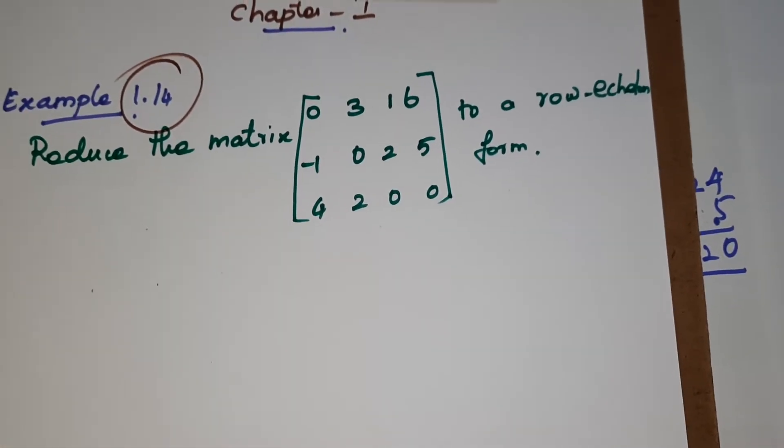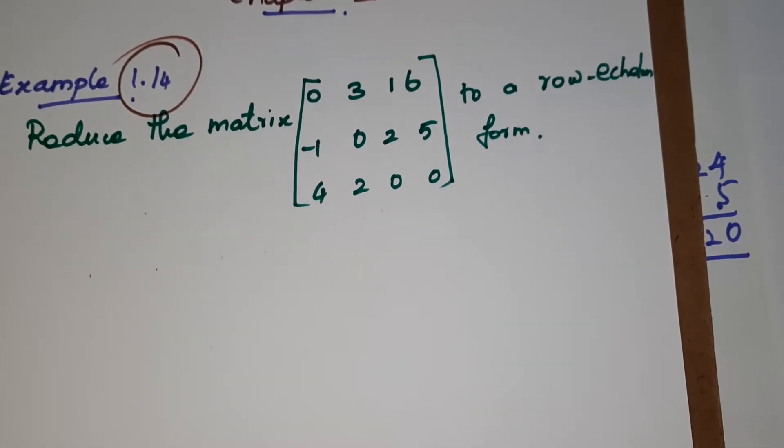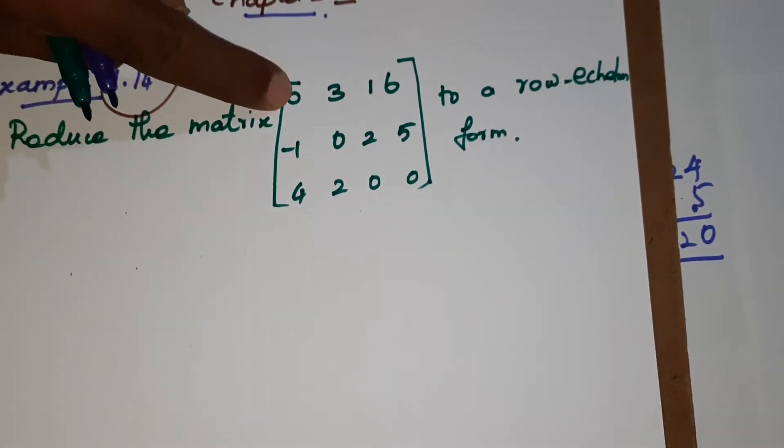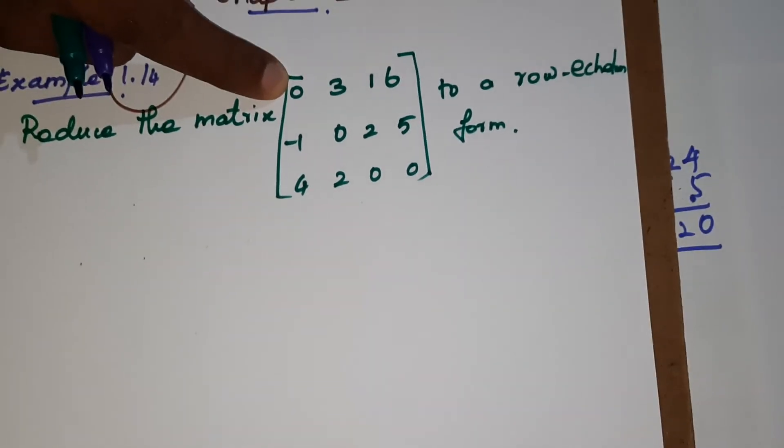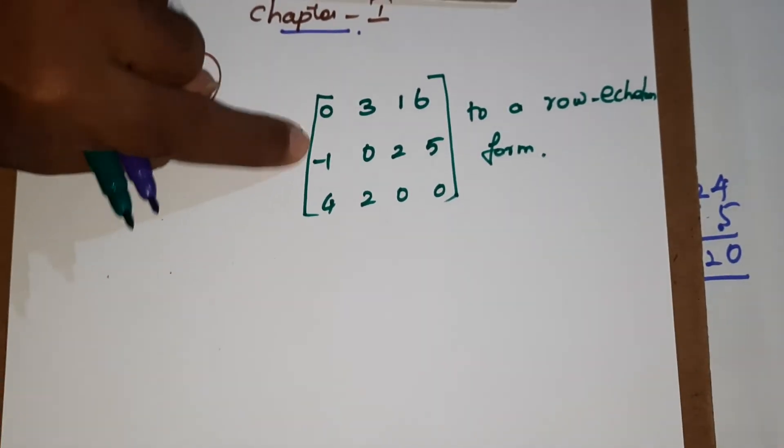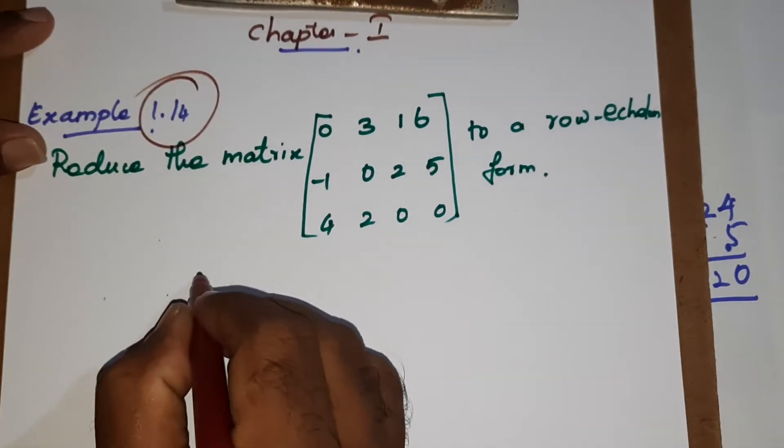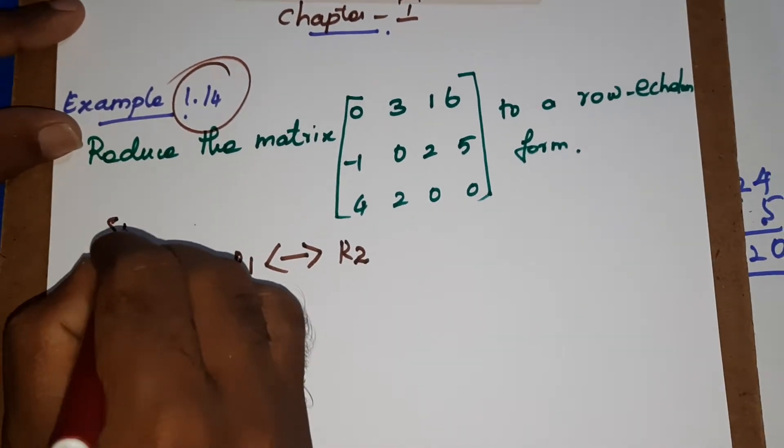But previous question was a 3 by 3 matrix, this is 3 by 4, that is 3 rows and 4 columns. So first step, we have actually 0 at the top. We should show a non-zero element, then only we can make the elements underneath 0. So what we have to do, we have to interchange. First step, we interchange R1 and R2, that is the solution.